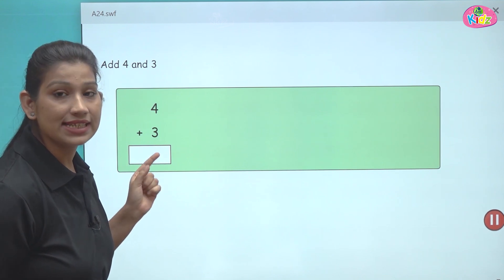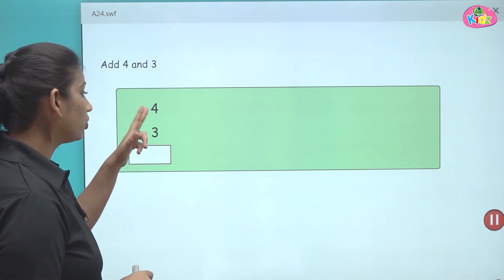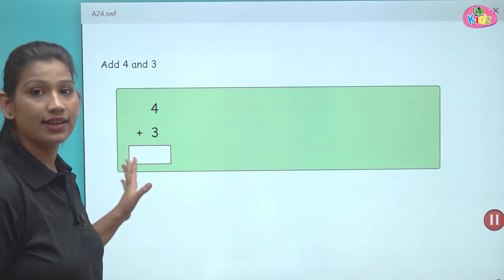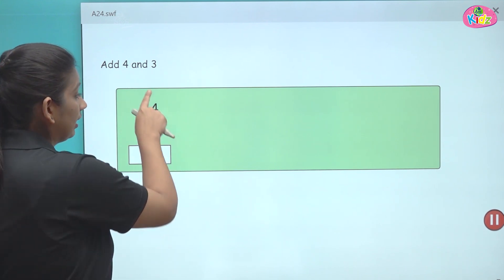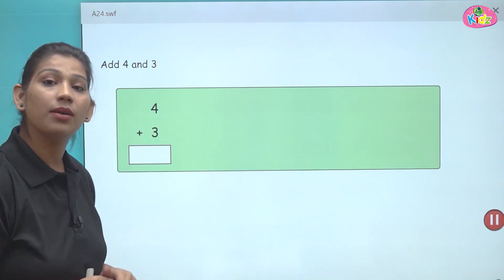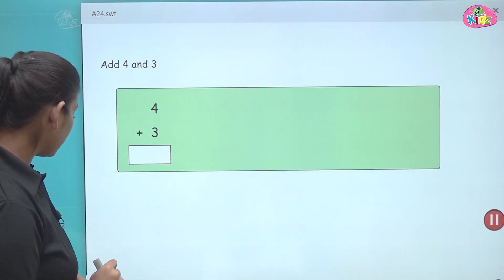Aap bich mein aap plus ka sign daalenge, add ka sign daalenge. Ye jo sign hota hai, ye plus ka sign hota hai. So we will write four plus three like this. This is column. These are only one digit numbers. So that means they are ones. We will add ones with ones.